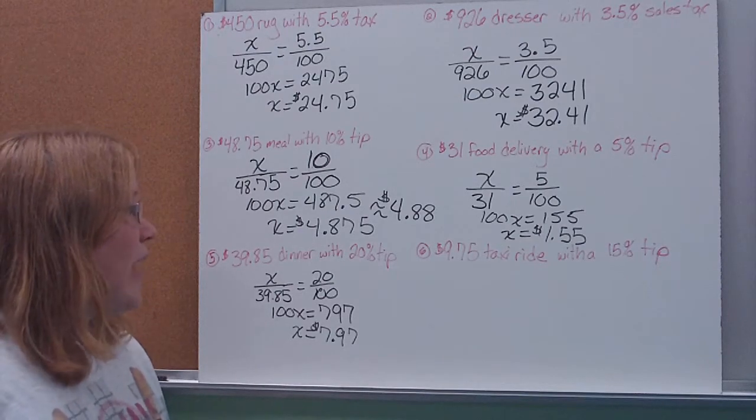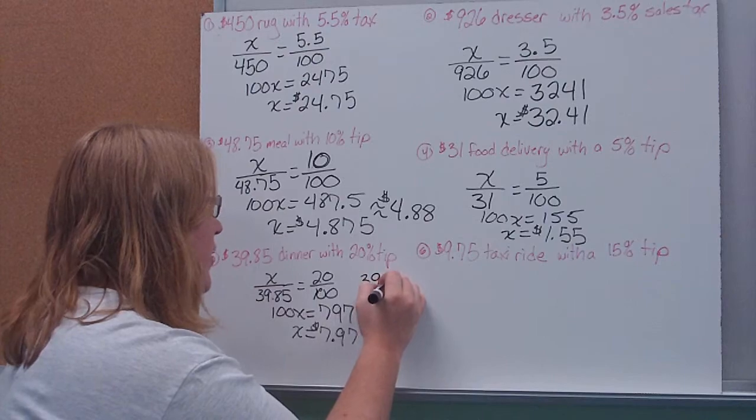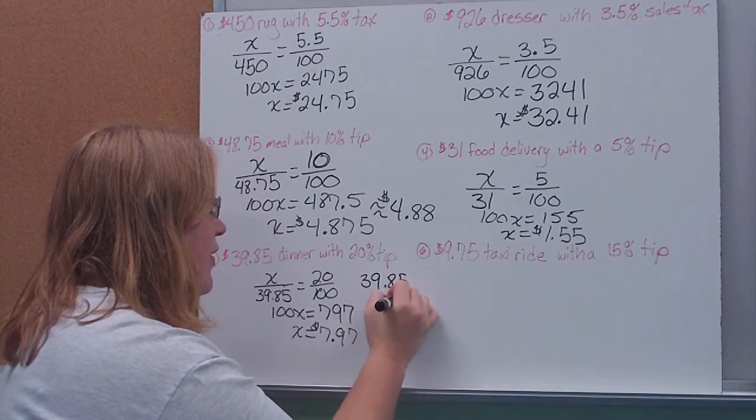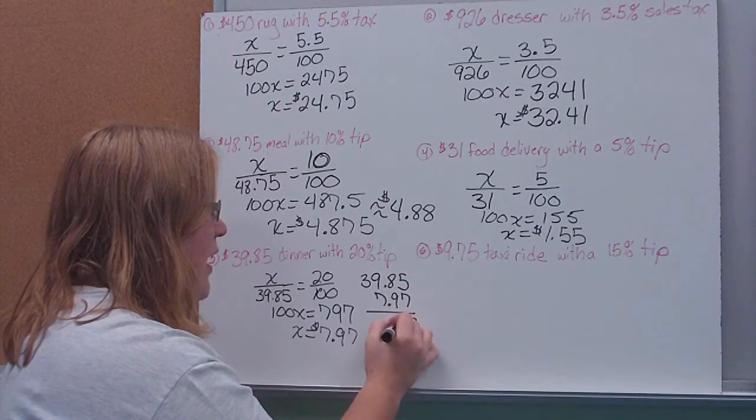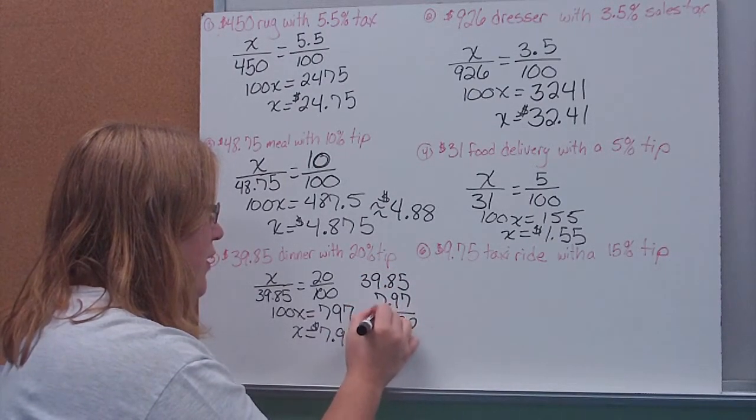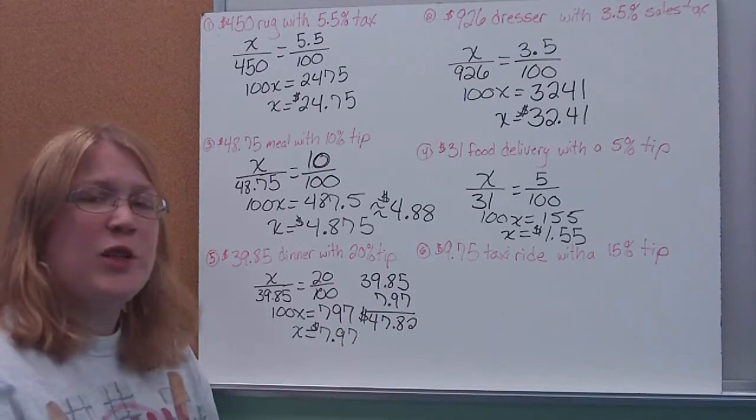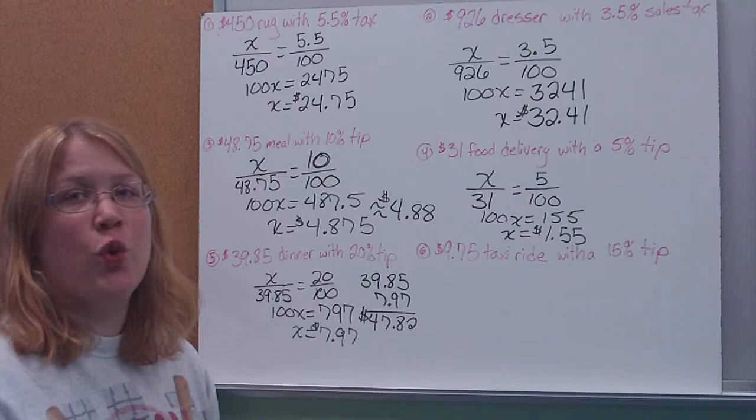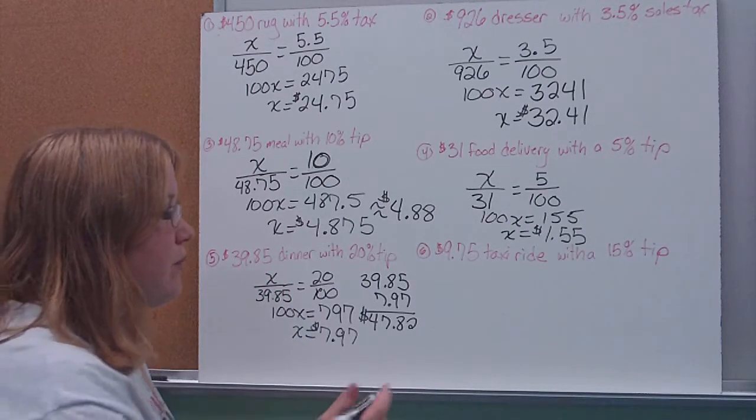But how much would that be total along with the meal? Well, now all I'm going to do is add. So I'm going to take my meal price and the amount that I'm planning on tipping to figure out my total cost. So altogether, if I give them that big of a tip, I'm going to pay $47.82 in all for this dinner.